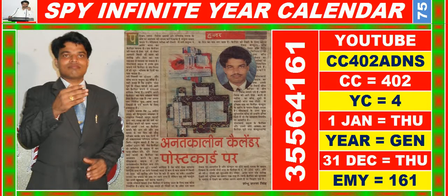Good morning, dear friends. You are heartily welcome in Master Key of Success. In this video you are watching SPY Infinite Year Calendar for the year having calendar code equal to 402, as well as you may search it on YouTube by CC 402 ADNS.